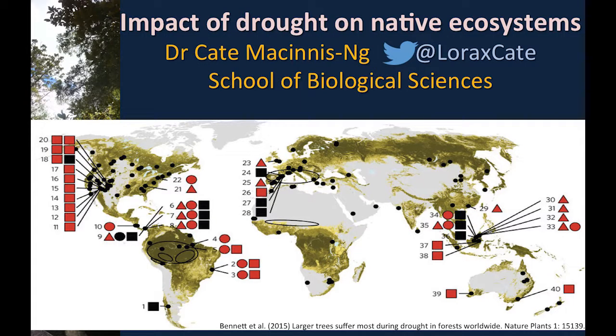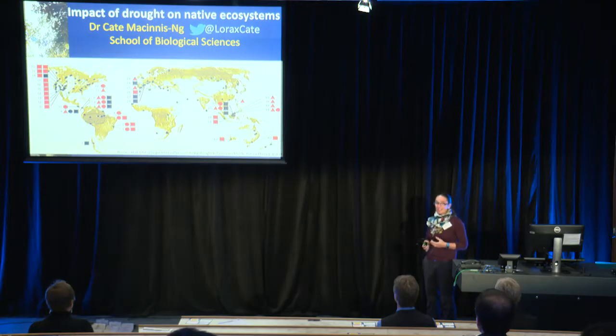Drought-induced forest mortality is a global phenomenon that involves trees dying during dry periods. Recent research is showing that this is an event that's increasing in prevalence across the world, because as the climate changes, extreme events like drought are becoming more frequent and also more severe. This has really big impacts and consequences for our biodiversity and conservation, because a dead forest doesn't support a healthy ecosystem.